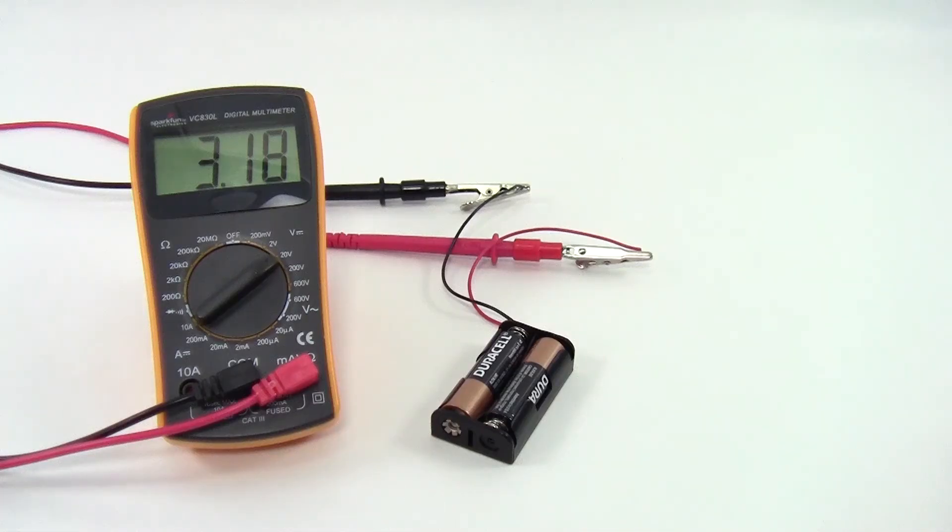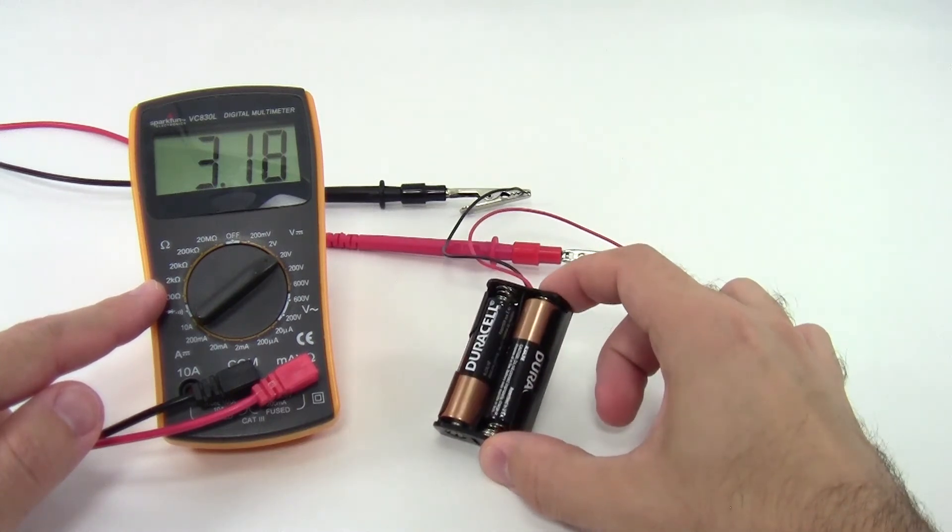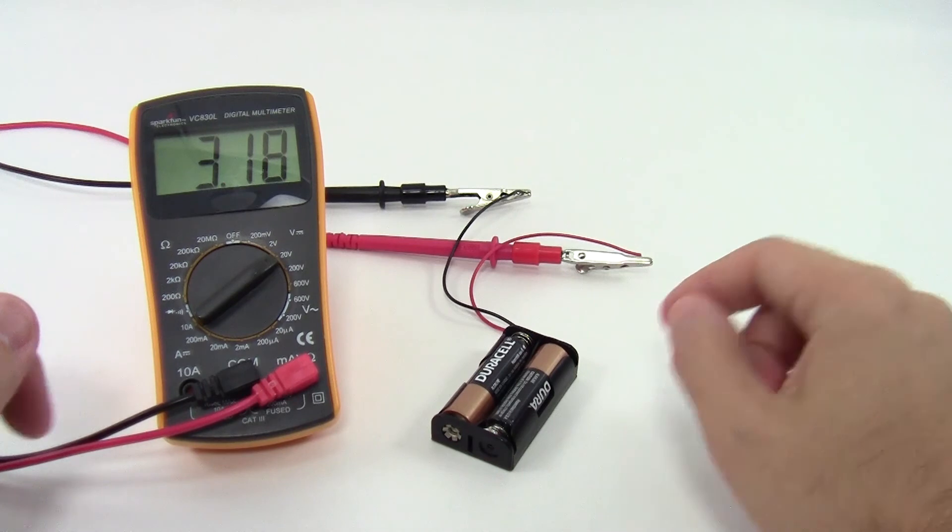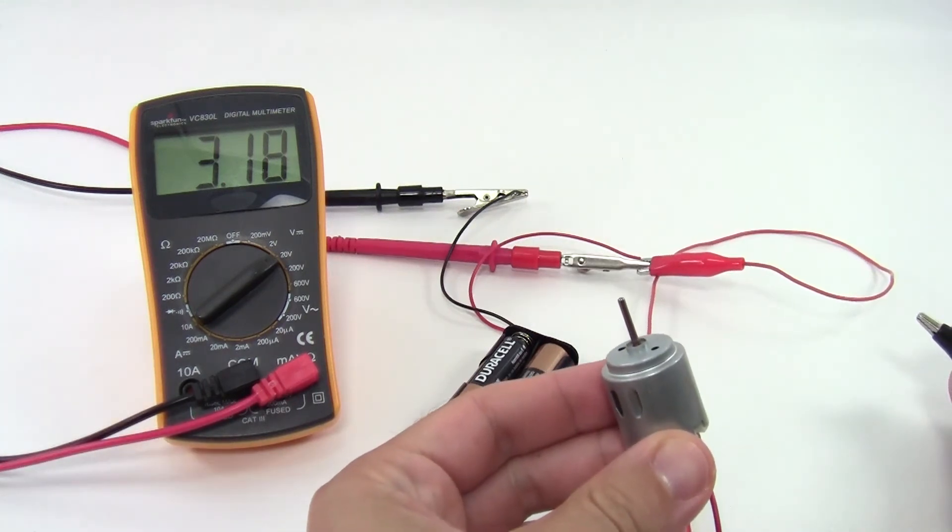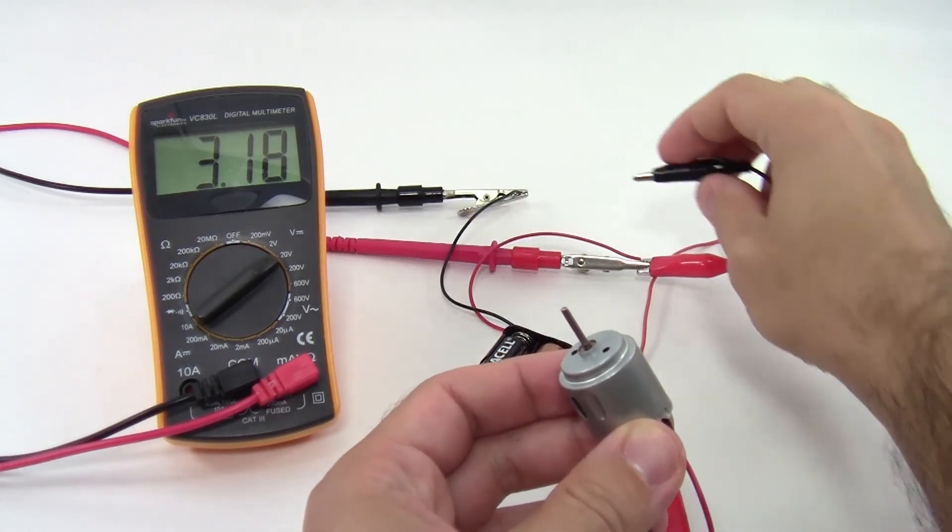So let's show this in a demonstration. Here I have my multimeter set to measure voltage, and it's connected to my 2xAA battery pack, which I can see is measuring an open circuit voltage of 3.18 volts. I'm going to take this motor and connect it to the battery pack. You'll see that when I do that and the motor starts spinning, the voltage drops.